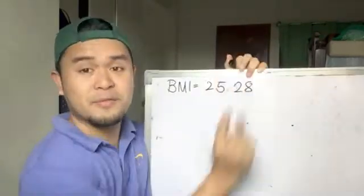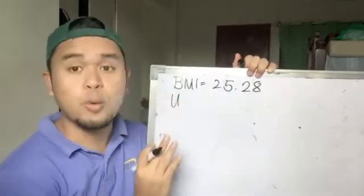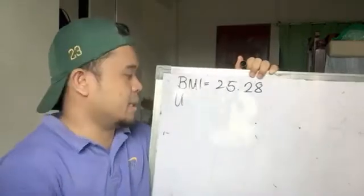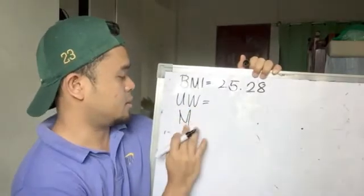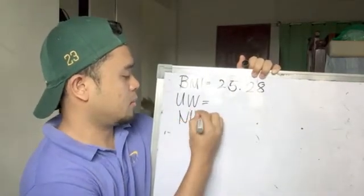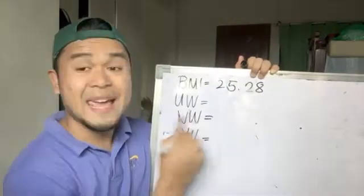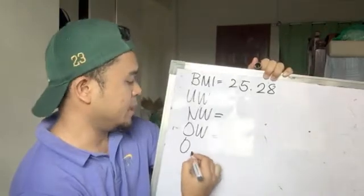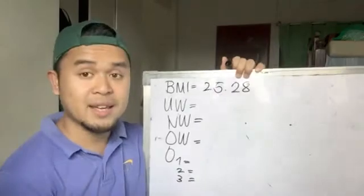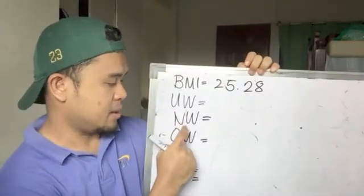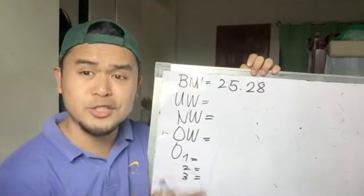BMI has four categories: underweight, normal weight, overweight, and obese — with obese divided into obese 1, 2, and 3. So am I underweight, normal weight, overweight, or obese 1, 2, or 3?